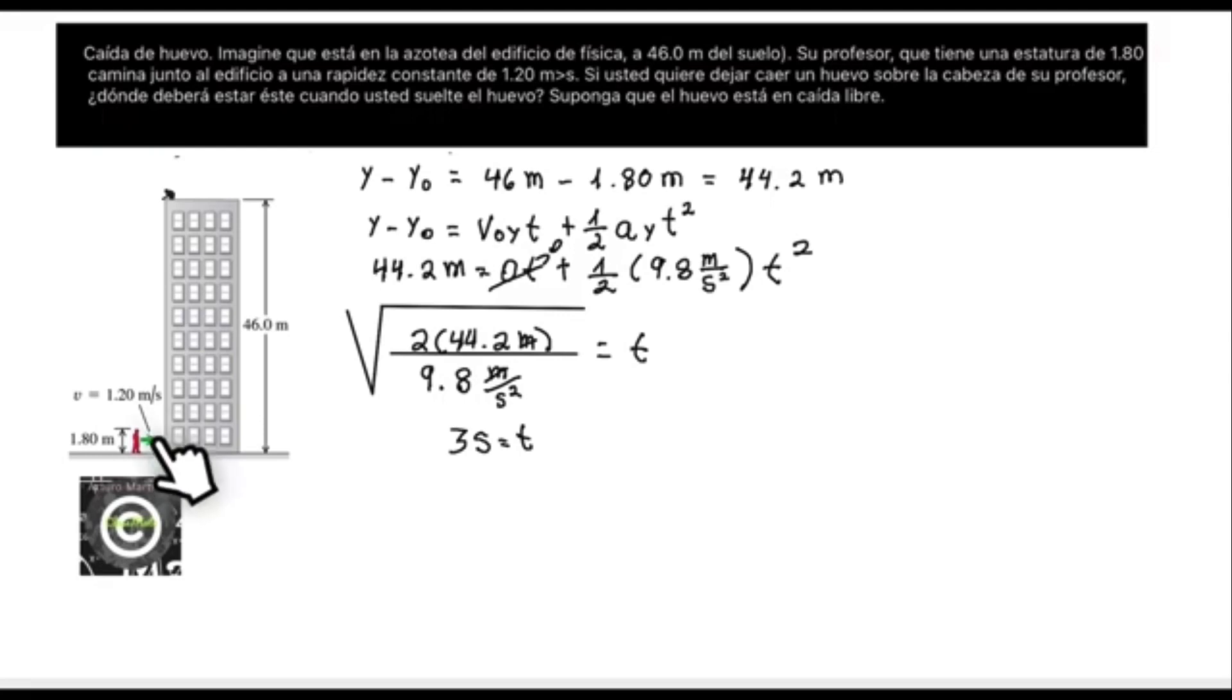As we know that the teacher must be at the entrance of the building when the egg falls on his head, we have to find out what distance he will be from the building when the student drops the egg, which will be three seconds, the time it will take to fall and reach the height of 44.2 meters, which is exactly at the head of the teacher.